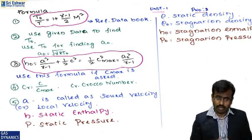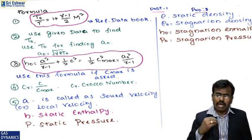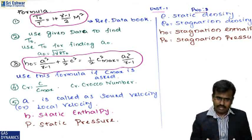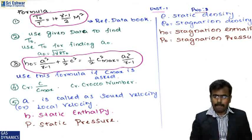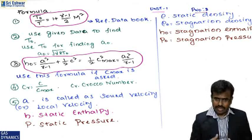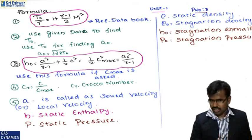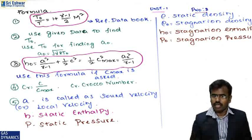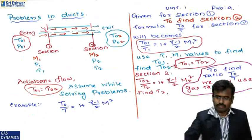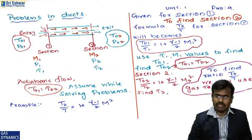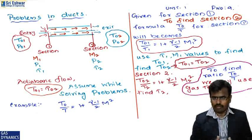Crocco number is the ratio c/c_max. Key notation: 'a' is local sound velocity, p is static pressure, h is static enthalpy, ρ is static density, ρ₀ is stagnation density, h₀ is stagnation enthalpy, and p₀ is stagnation pressure. These are the notations used in problems.